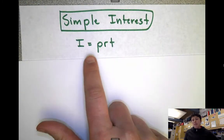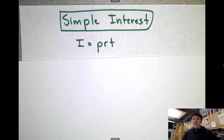I equals PRT. I for interest, P for principal, R for rate, and T for time, where time is in years. So if you're watching this video, this should not be a brand new formula to you.